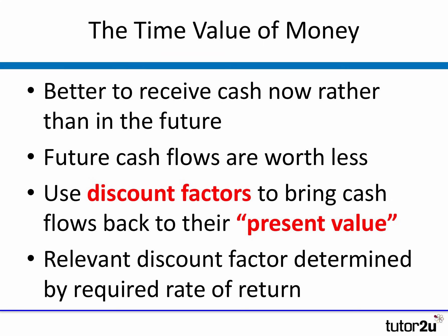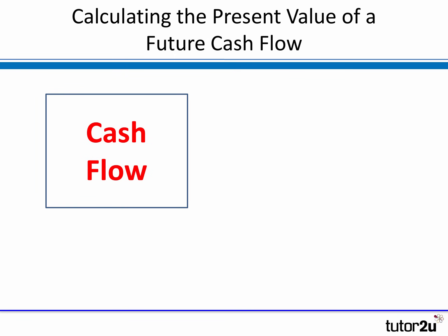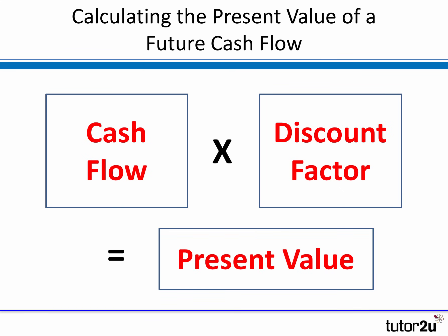The discount factors will usually be given to you, and essentially they're linked to the required rate of return of the project. For the rest of this video, we'll just look at the calculation of present value and net present value. To calculate the present value — the value now of a future cash flow — you take the cash flow and multiply it by the discount factor to give the present value.